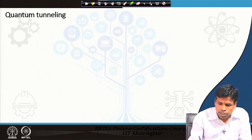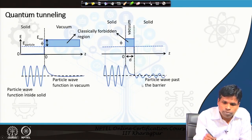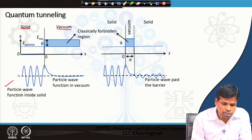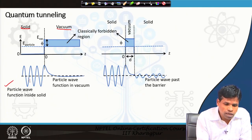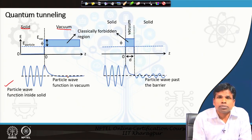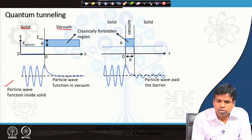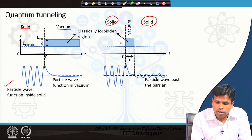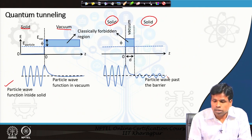We can better describe this using a graph. In the first case, there is a solid and a vacuum. The particle has a wave function designated as psi. It has a wave function inside the solid that will exponentially decay as we go above the sample towards the vacuum level. If we bring two solids close to each other with a gap d — called the barrier thickness — then once the wave crosses the barrier, it will tunnel into the other solid.